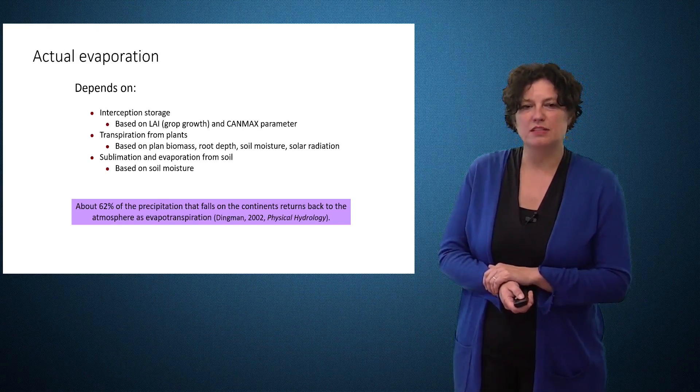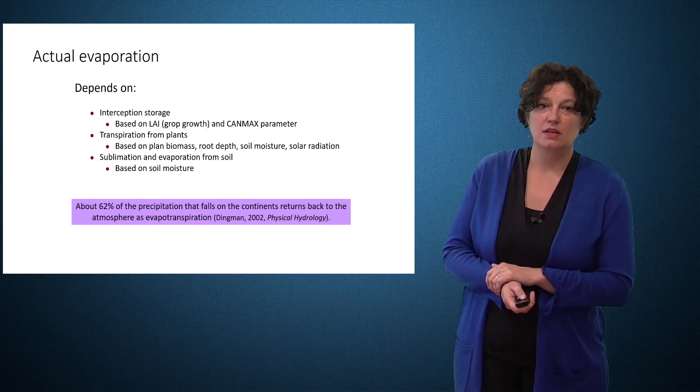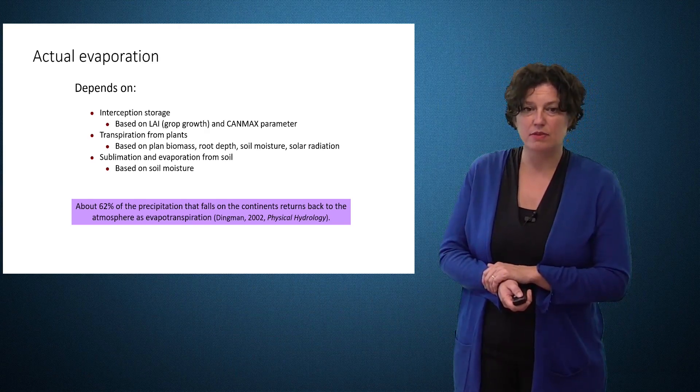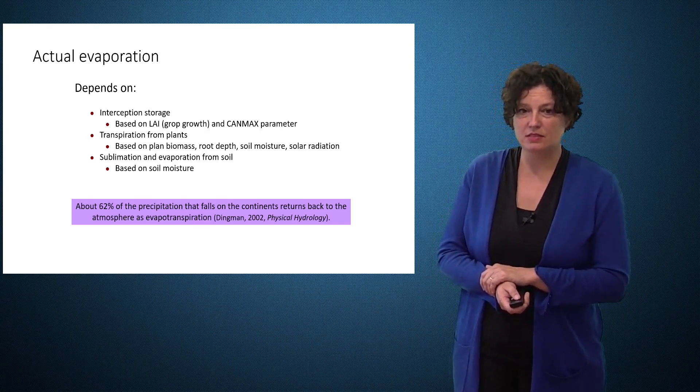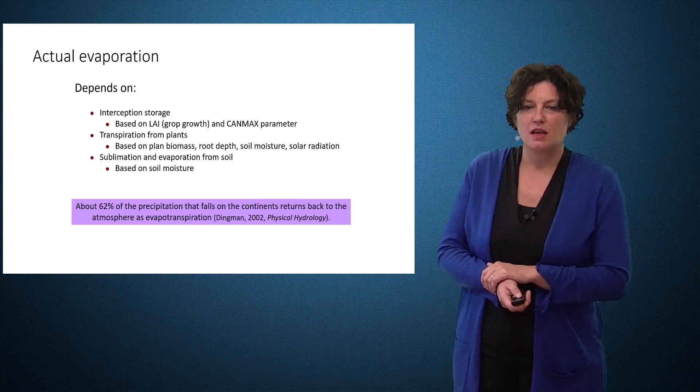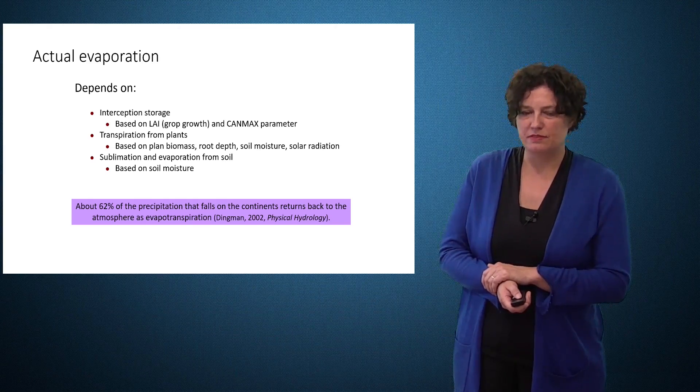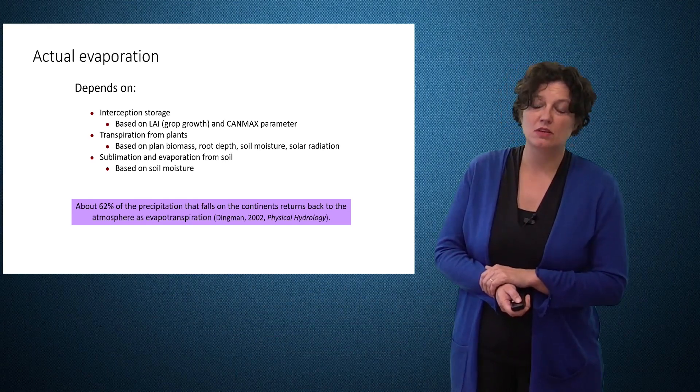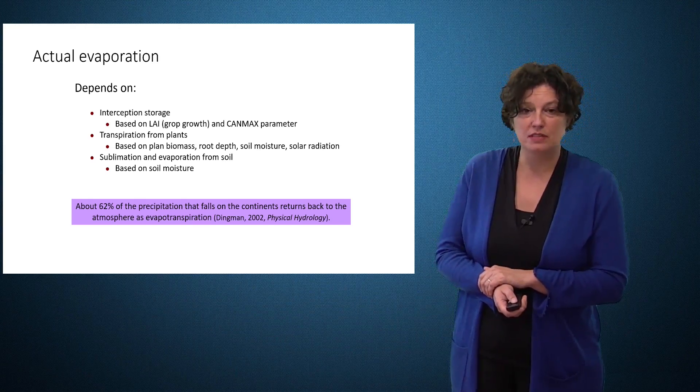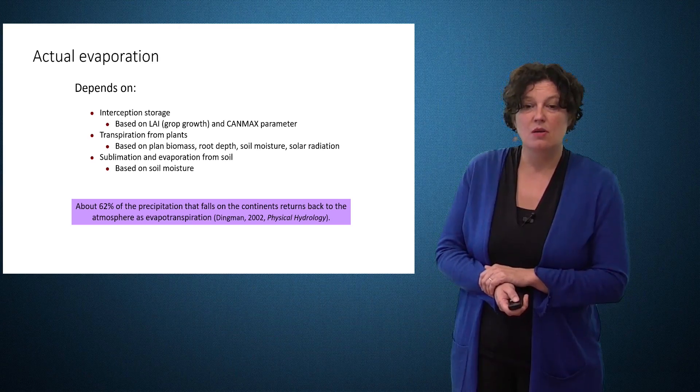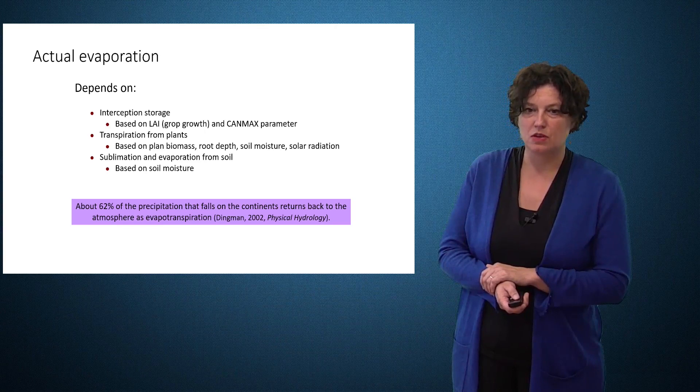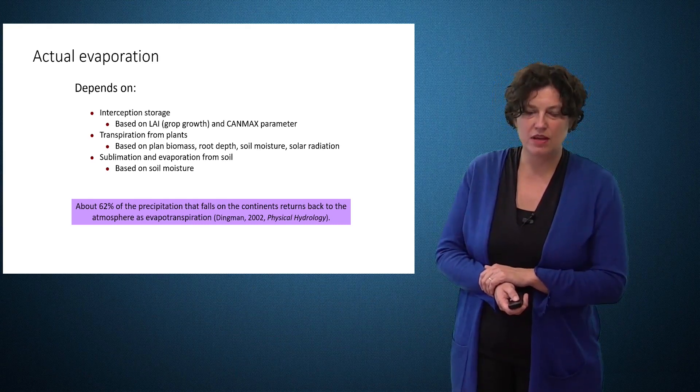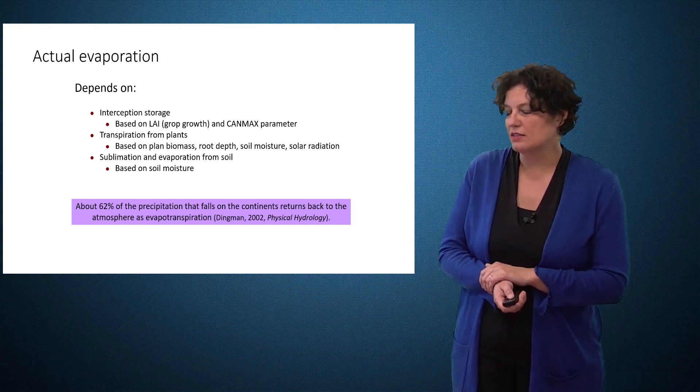Once we have potential evapotranspiration, we can calculate actual evaporation. This depends on several aspects. First of all, you have evaporation calculated from interception, and this depends on the leaf area index, which again depends on the crop and the crop growth. In addition, there is this parameter CANMAX, which is specified for plants. Second, we calculate the transpiration from plants based on the availability of plants within the HRU represented by biomass, leaf area index, but we also have a dependence on root depth, soil moisture and solar radiation. Finally, we have evaporation directly from the soil. This will be the highest for bare soils.